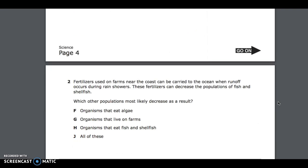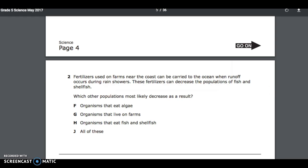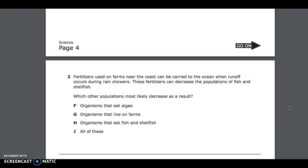Number 2. Fertilizers used on farms near the coast can be carried to the ocean when runoff occurs during rain showers. These fertilizers can decrease the populations of fish and shellfish. Which other populations most likely decrease as a result? F, organisms that eat algae; G, organisms that live on farms; H, organisms that eat fish and shellfish; J, all of these.